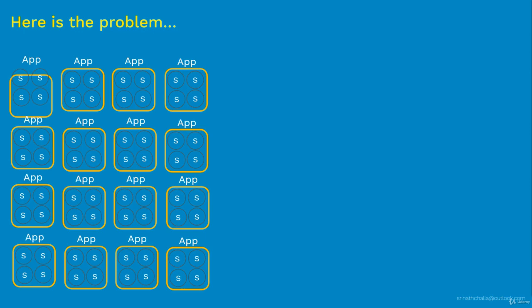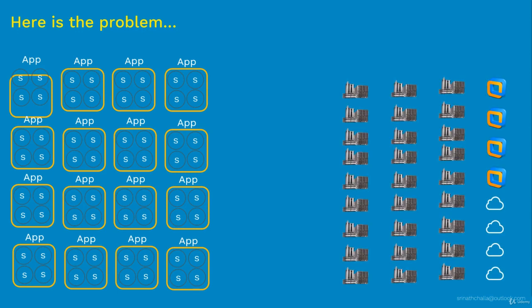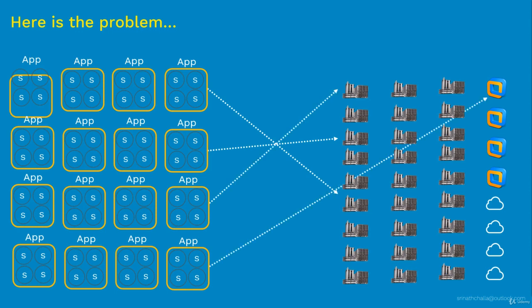Here's the problem: on one side we have hundreds of apps consisting of a large number of microservices, and on the other side we have a large IT infrastructure with physical servers, in-house VMs, and cloud VM instances. Since we're talking about microservices, we need to talk about containers, because most of the time these microservices run inside containers — in most cases, Docker containers.